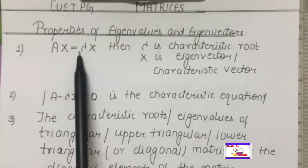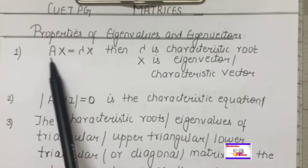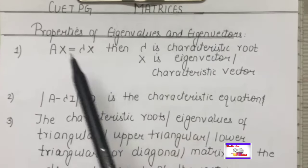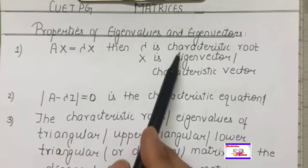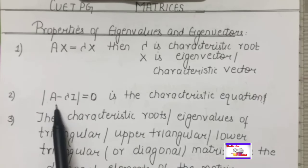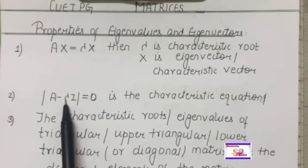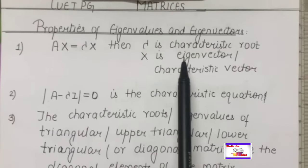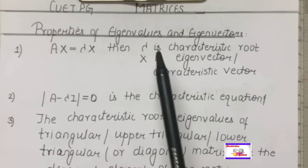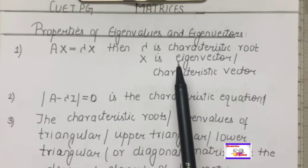So first, Ax = λx — this equation is the fundamental equation where x is the eigenvector and λ is the eigenvalue. The characteristic equation is |A − λI| = 0. Once you solve this equation, you get the λ values, which we call eigenvalues. These are also called latent roots or characteristic roots.